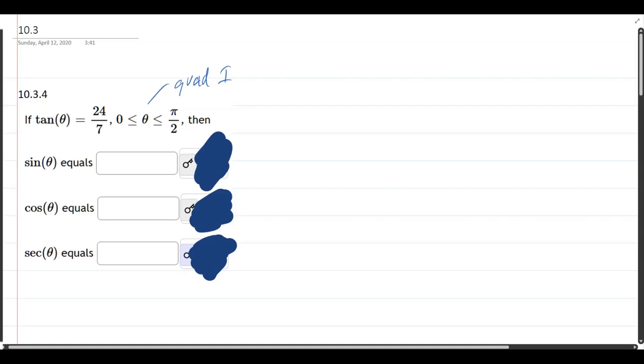So now let's use the tangent. Theta is 24 sevenths. So on this, I'm going to use SOHCAHTOA. So tangent is opposite over adjacent. And so we're opposite 24 to adjacent seven. We're in quadrant one, everything is positive.